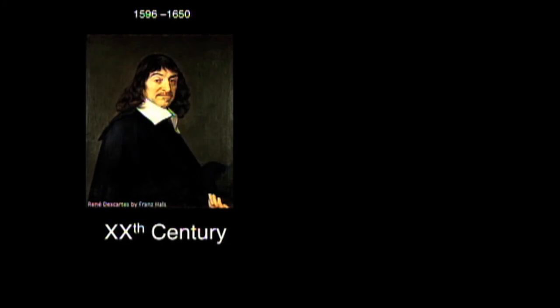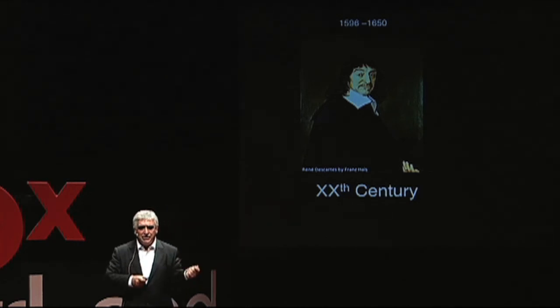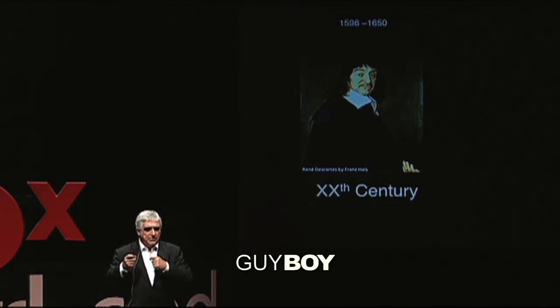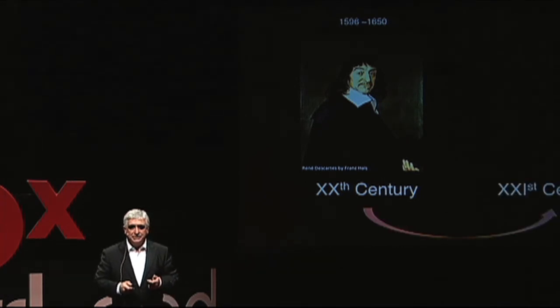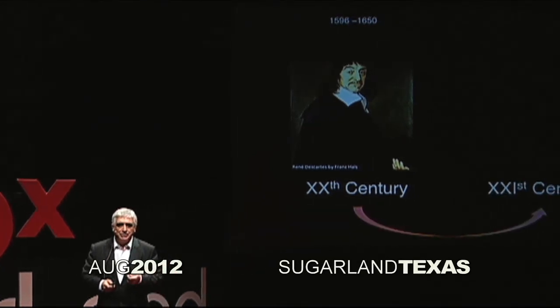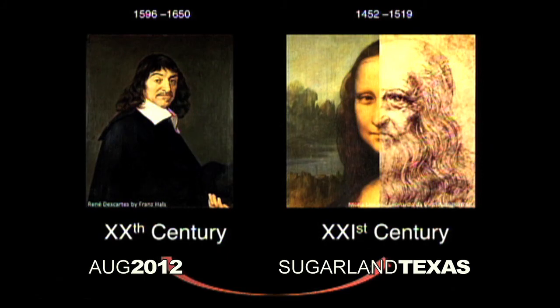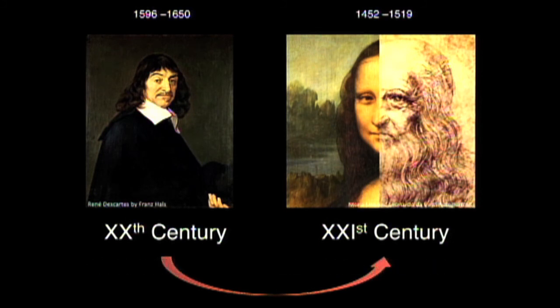The 20th century was the century of René Descartes — the revelation of STEM: science, technology, engineering, and mathematics. We built cars, airplanes, space shuttles, nuclear power plants. What will the 21st century be? I strongly believe it will be the century of Leonardo da Vinci. What is really interesting is that it's a kind of back to the future — because Leonardo da Vinci lived one century before René Descartes. Thank you very much.